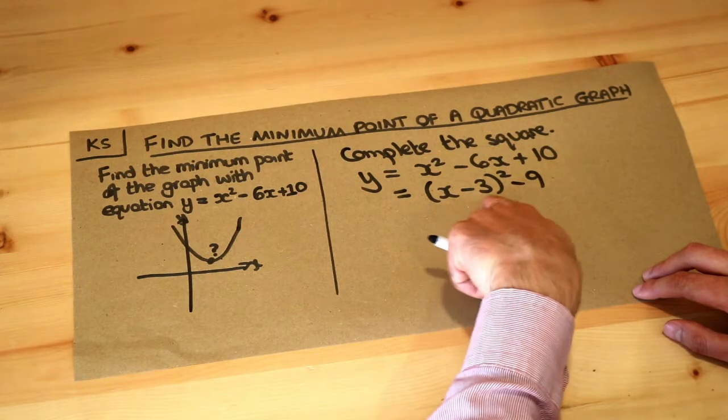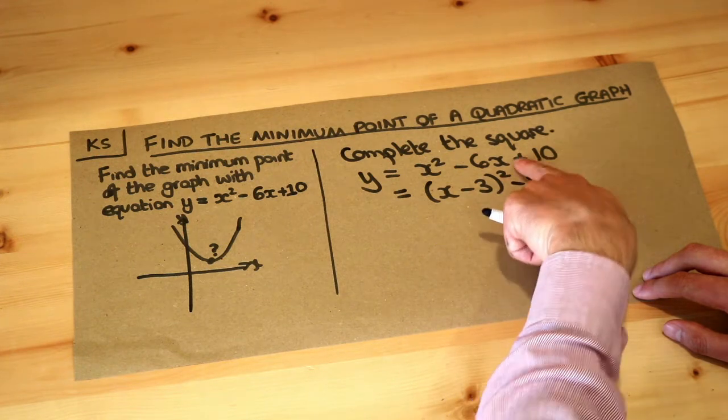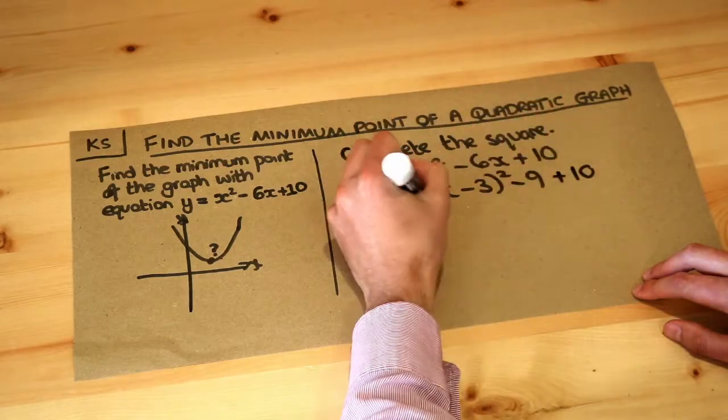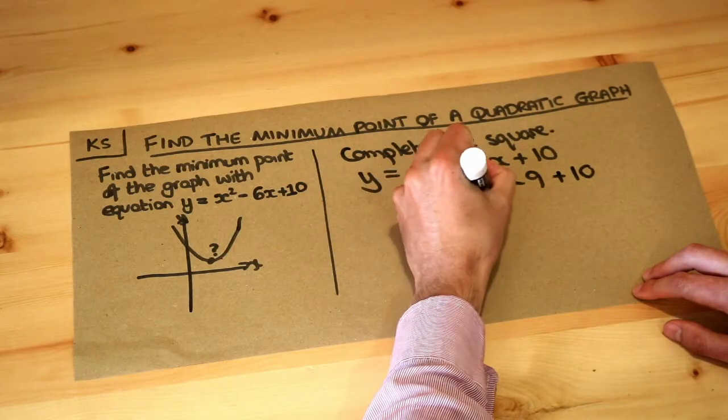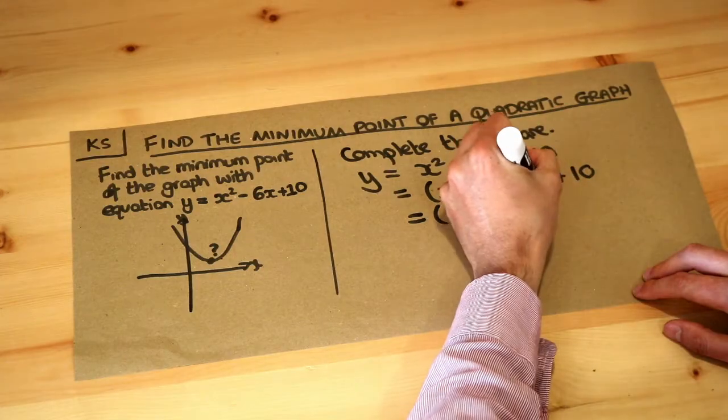If you were to expand this you get x squared minus 6x plus 9. We don't want the plus 9, so we're going to subtract it. Then we still got that plus 10 at the end, and that gives us x minus 3 squared - if we tidy up, minus 9 plus 10 is plus 1.